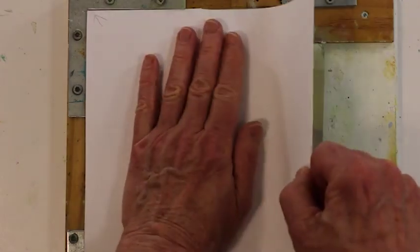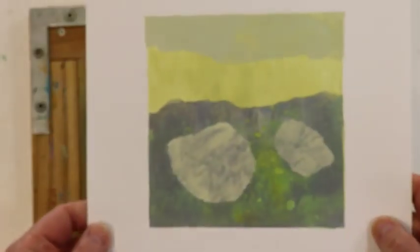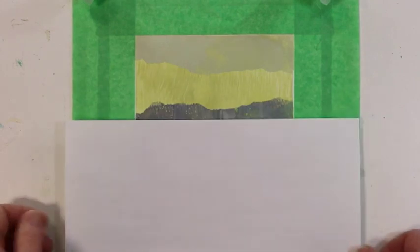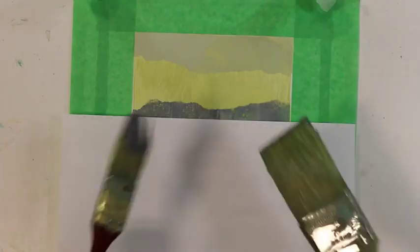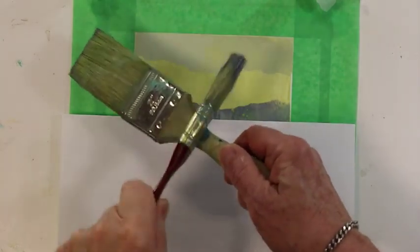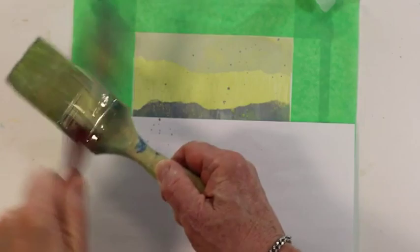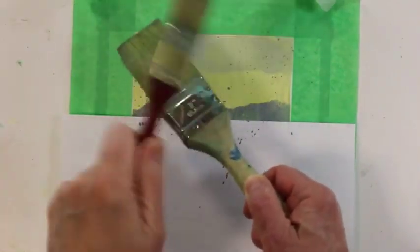I then decided I wanted to add some visual texture to the sky using a spattering technique. So I taped off the print this time and protected all the exposed areas of paper around the print. I loaded the red handle brush with some water and that purple color from the background, just tapped it against the other brush, and built up layers and layers of spatter on the surface.